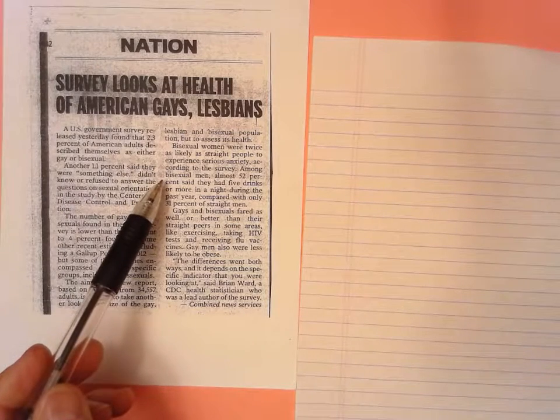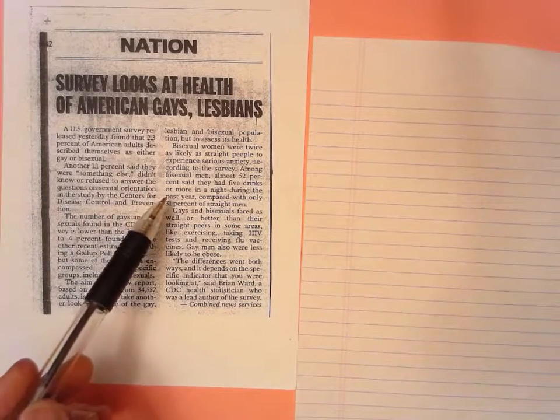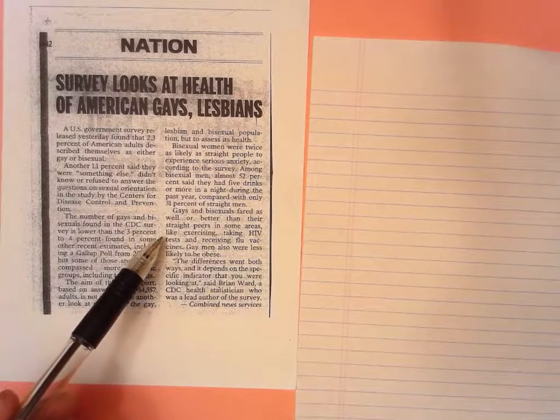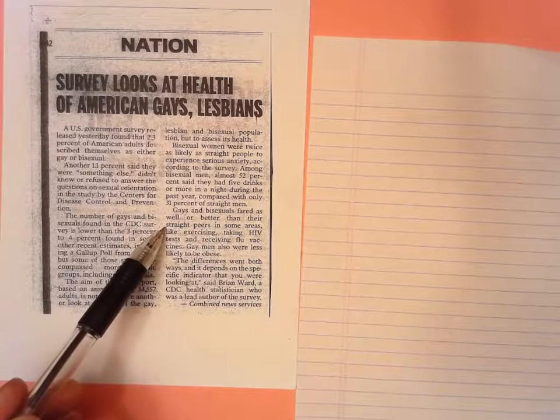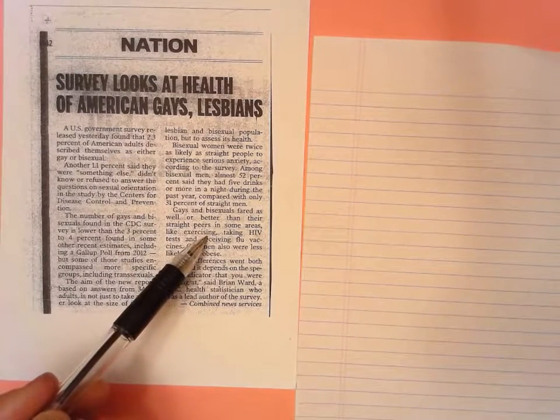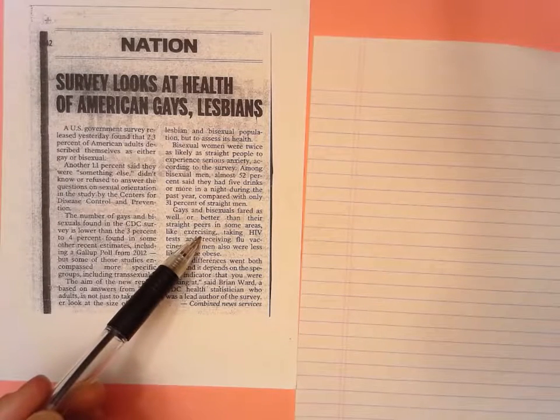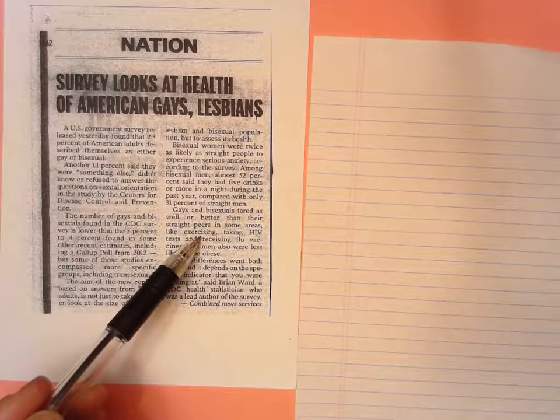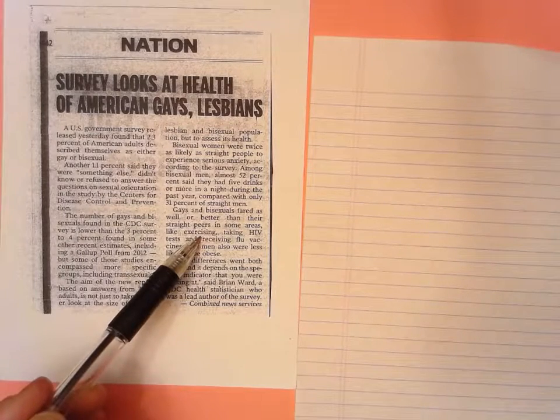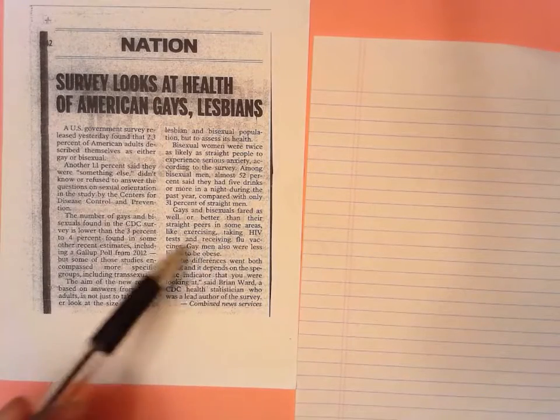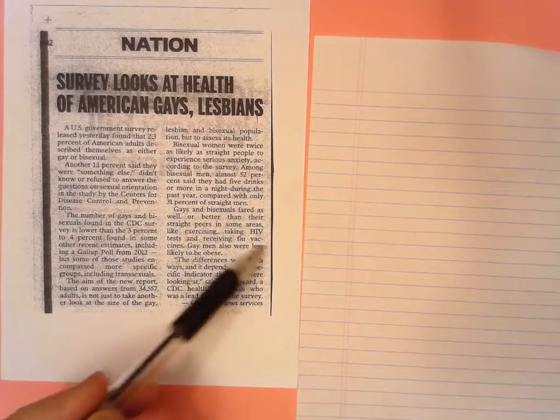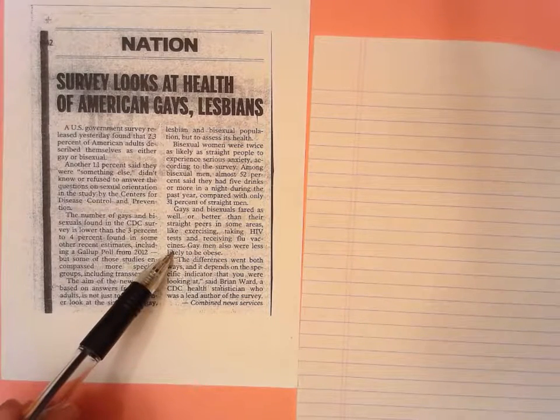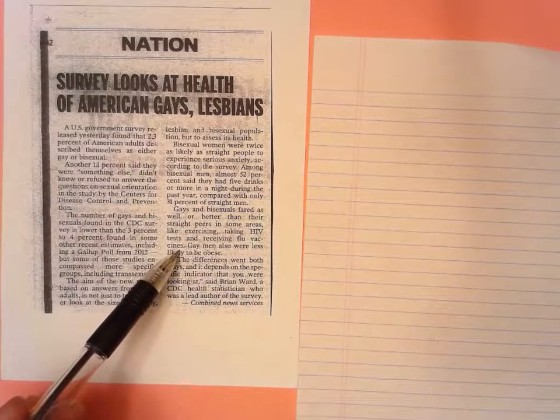Okay, let's read on and see if we can find another variable. I had written down about a flu shot. Here we go. Gays and bisexuals fared as well or better than their straight peers in some areas, like exercising. Exercising is a variable. Do you exercise is one type of variable, but how many days per week you exercise is a different type of variable. Taking HIV tests and receiving the flu vaccine. Receiving the flu vaccine.